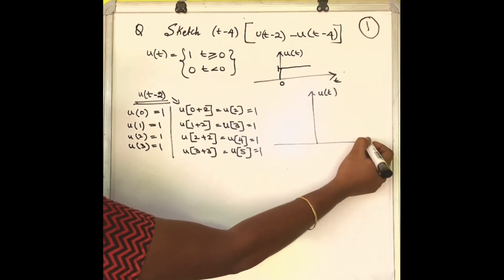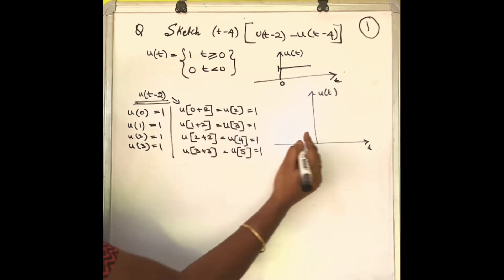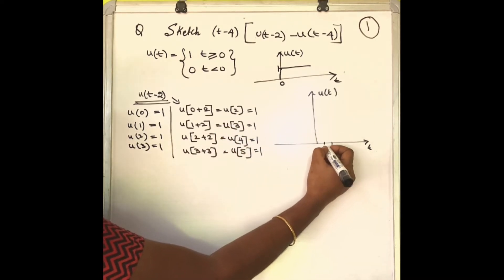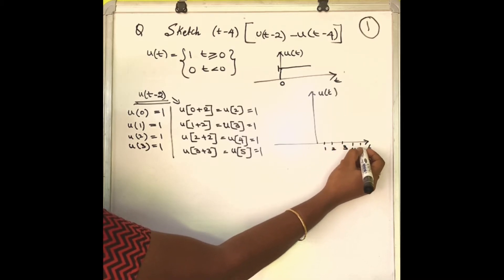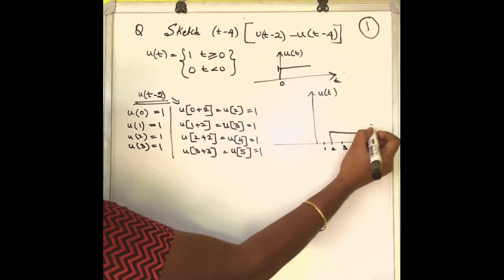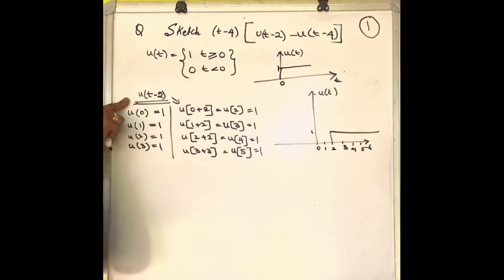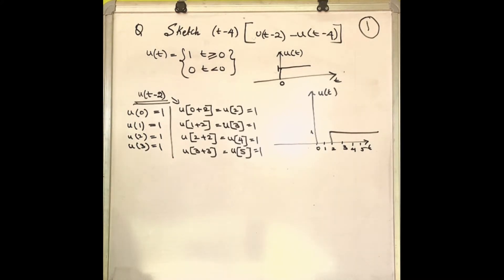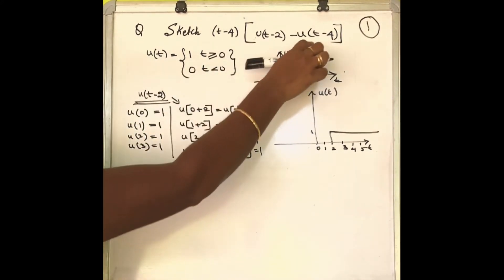Draw the graph for u(t minus 2). The t value starts from 2 and goes on — the signal has been delayed by 2. We have completed the first part.